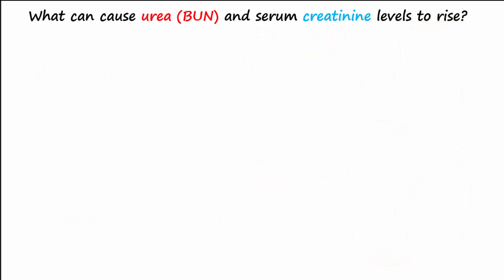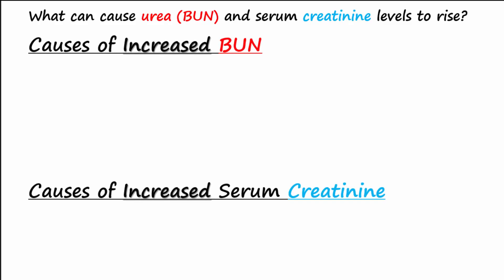What kinds of circumstances cause the urea and creatinine to rise in the blood? Acute kidney injury, or AKI, and chronic kidney disease, or CKD, can cause both BUN and serum creatinine to rise. Both urea and creatinine are freely filtered by the kidney. So with AKI, where the kidney is not filtering as much and is experiencing a low glomerular filtration rate, less urea and creatinine will be excreted.